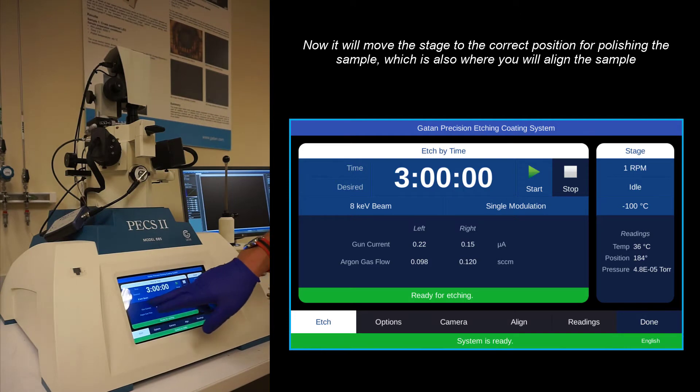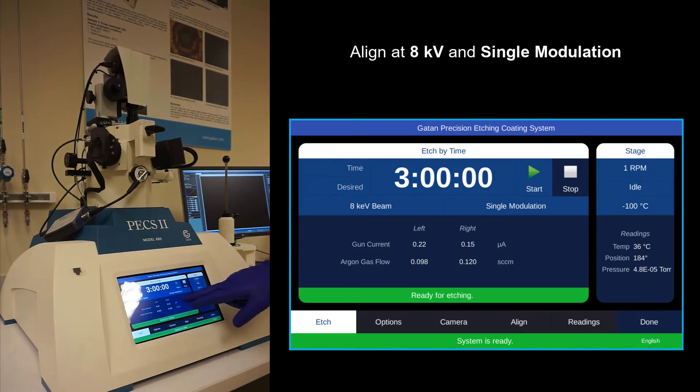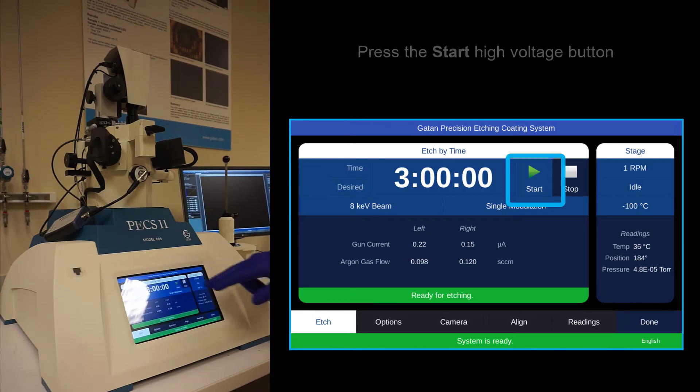When you align, add 8 kV with single modulation, and then the time doesn't matter because it will only take about 30 seconds. Turn on the high voltage.